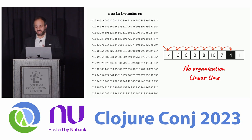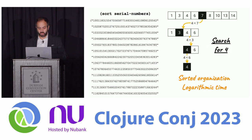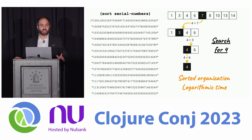So we get leverage by organizing the data. This is the critical aspect of this talk. Leverage comes from organization. And there are only a couple ways to organize data. One way is to sort it. If we take all the serial numbers and put them in sorted order, this opens up approaches like divide and conquer, like binary search. Now you're logarithmic time. You've gained some leverage. It's less work to do a thing.